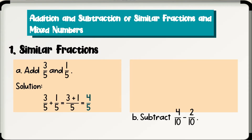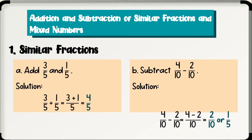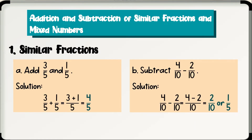Letter B: subtract 4 over 10 minus 2 over 10. Solution: 4 over 10 minus 2 over 10 is equal to 4 minus 2 for the numerator, which is 2, over the common denominator, which is 10. So we have 2 over 10. When simplified to lowest term, we have 1 fifth. Therefore, 4 over 10 minus 2 over 10 is equal to 1 fifth.